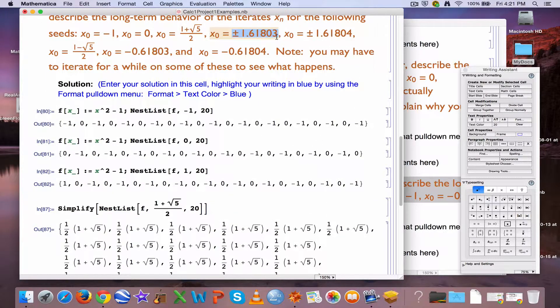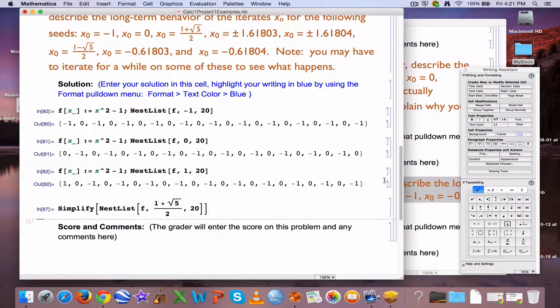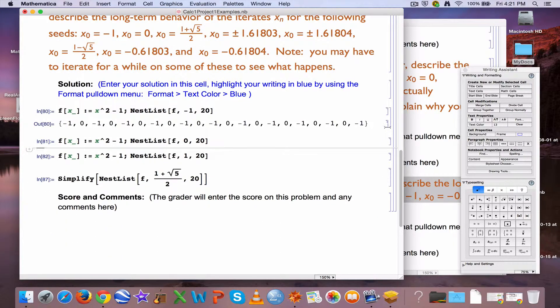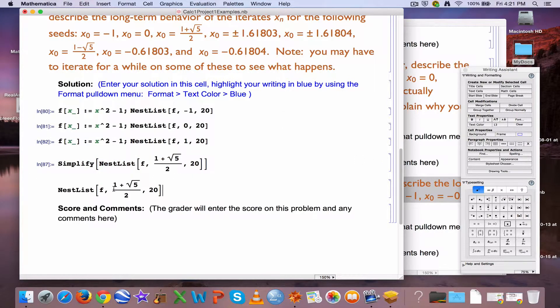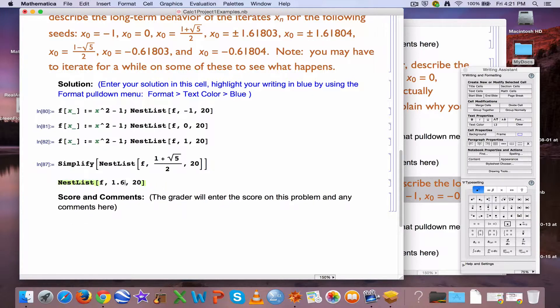Plus 1.61803 and plus 1.61804 are pretty good approximations to (1 + √5)/2. What happens when we plug those in? I think I will delete some of this output here so we can see more things. All right, copy and paste that,